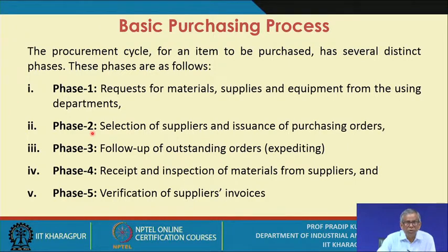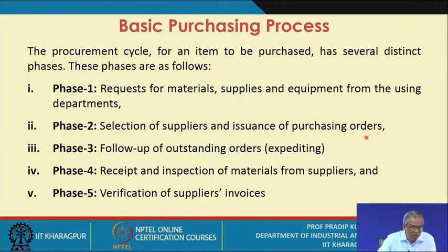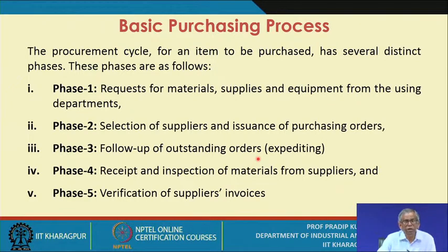Then we move to phase two. Here you need to select the suppliers, and once you select a supplier or group of suppliers for the given item, you need to issue the purchase orders. Phase two concerns the selection of suppliers and issuance of purchase orders. Once the purchase orders are issued, you move to phase three — the follow-up of outstanding orders, known as expediting. You must have a thorough idea about the different kinds of expediting norms and procedures to follow under different conditions.